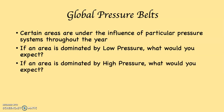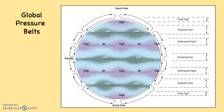Whereas if an area is dominated by high pressure throughout the year, would you expect the area to be wet or dry? Dry. And would you expect that area to be heavily vegetated or not very vegetated? Not very vegetated. So let's take a look at this map, which shows the global pressure belts on Earth.